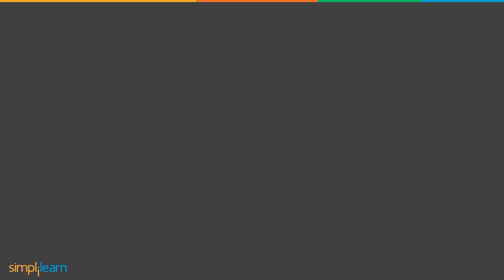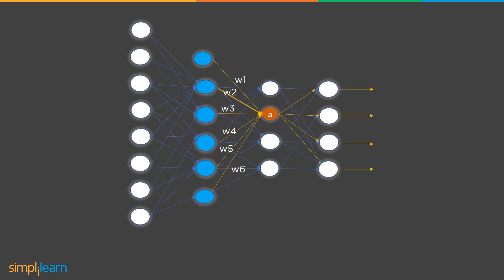After reaching the output layer, we get the resulting output for the given model from the input. Output with the highest activation will be considered as the suitable output match for the corresponding input. Loss is calculated on what the model has predicted as input and what the actual input is.